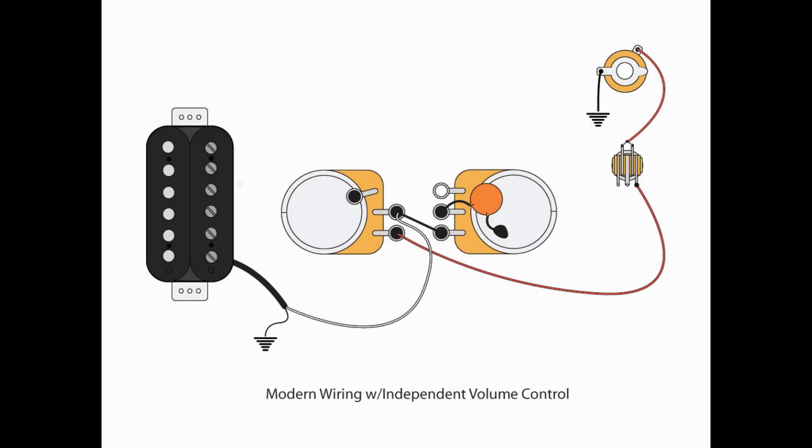So let's say we want to try something different. Here I'm showing a modern wiring with independent volume control. So for my pickup, my output is going to lug L2, the center lug of the volume pot. My jumper is going from L2 to L3 of the tone pot, and my output to my switch is coming from L1 of the volume pot.